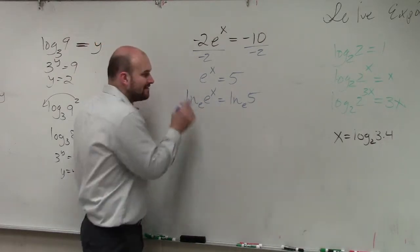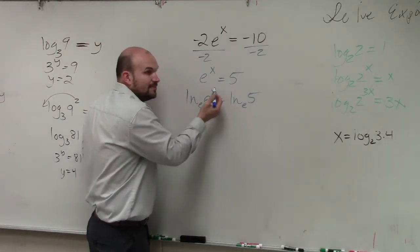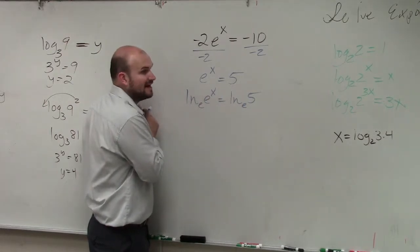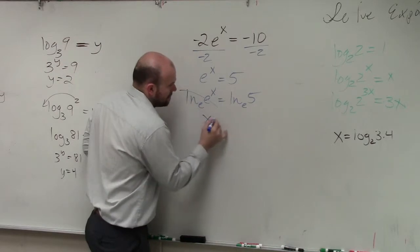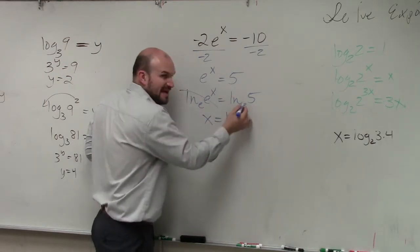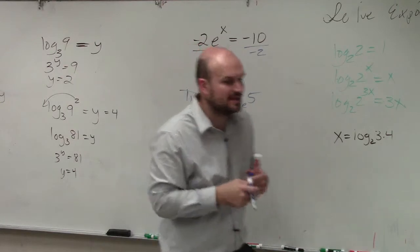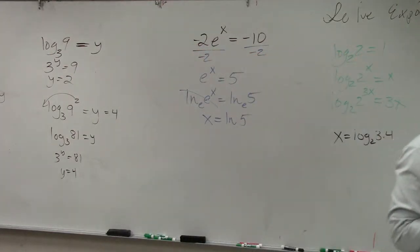So now we have ln base e of e raised to the x. We know that gets simplified to what? 1. Now we can get into that. Then I have ln base e of 5, which is really just ln of 5. We don't need to write the base e.